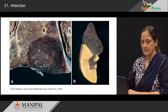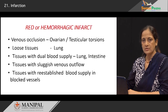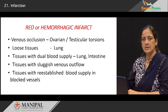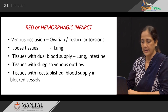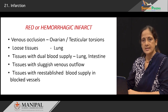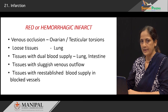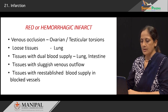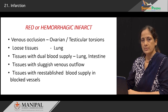Red infarct, on the contrary, results when there is venous occlusion. Because of the blockage of the outflow of venous blood, there is suffusion of that tissue with blood and congestion, which is responsible for the red color of these infarcts. It is seen in ovarian and testicular torsion where these organs twist around their pedicle causing venous occlusion. It is also seen in loose textured tissues like lung parenchyma, and in those supplied by dual blood supply such as lung and intestine. When one of the veins is blocked, blood from the other vessel suffuses the tissue and it becomes red. Tissues which have sluggish blood flow, or in which blood flow is reestablished after a blockage, will also undergo red infarction.